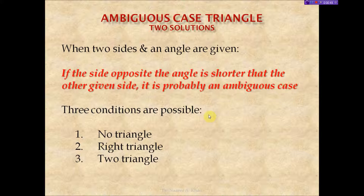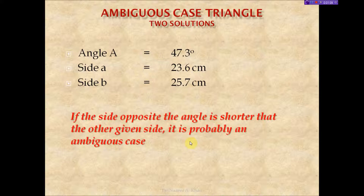When I say there's a possibility of an ambiguous case, there are other situations that could happen. We could have no triangle at all, we could have a right triangle, or we could have two solutions — two triangles. Let's look at some actual information. We are given three pieces of information for a triangle: an angle and two sides.